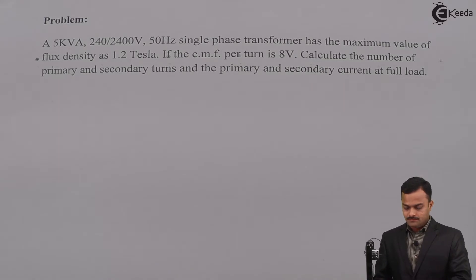A 5 kVA, 240/2400 volt, 50 hertz single-phase transformer has the maximum value of flux density as 1.2 tesla. If the EMF per turn is 8 volt, calculate the number of primary and secondary turns and the primary and secondary current at full load.